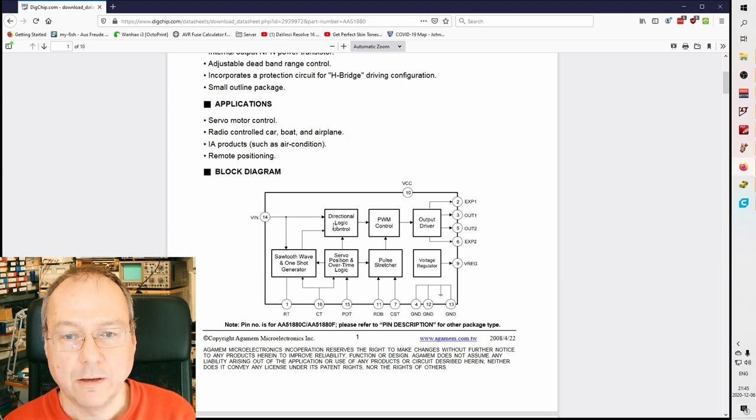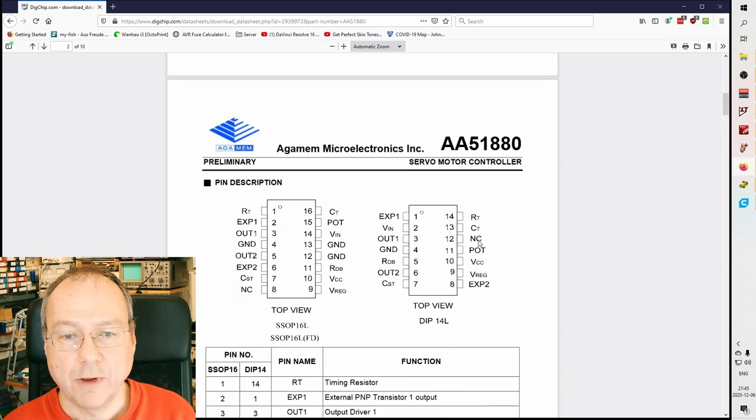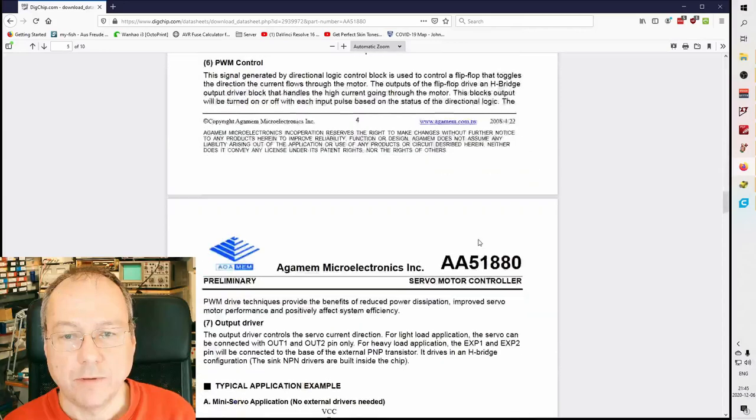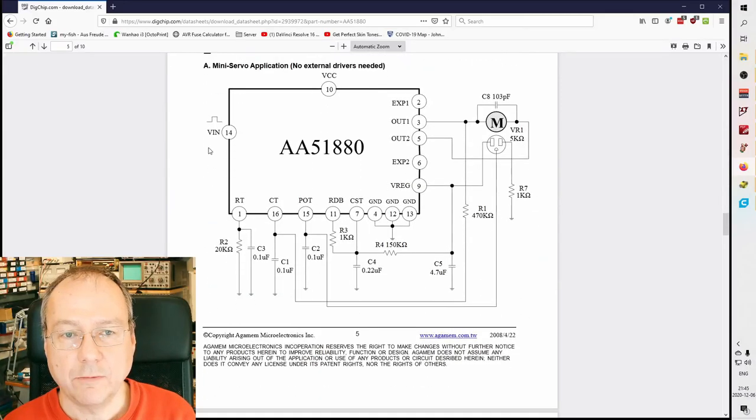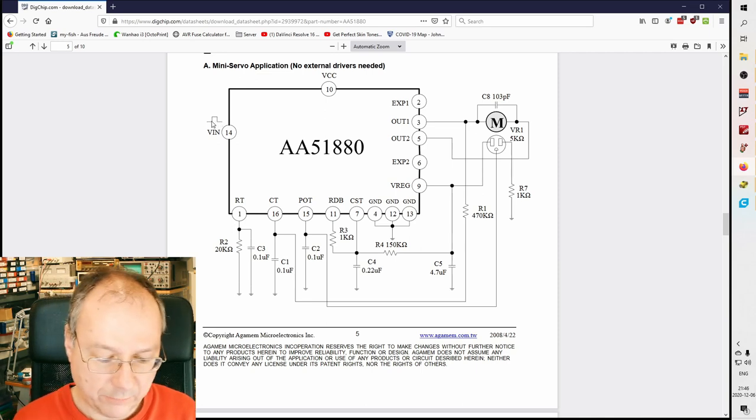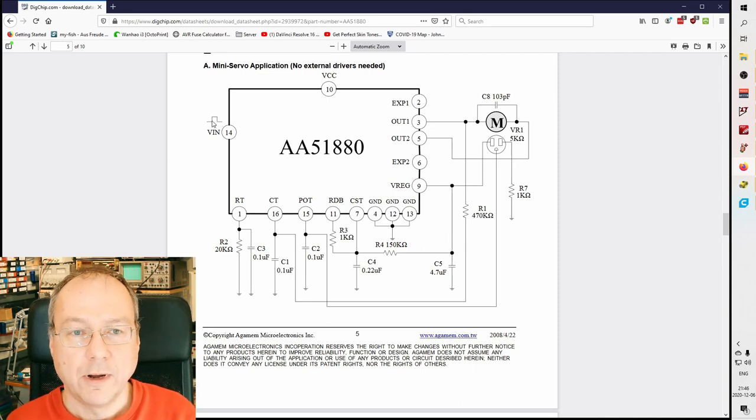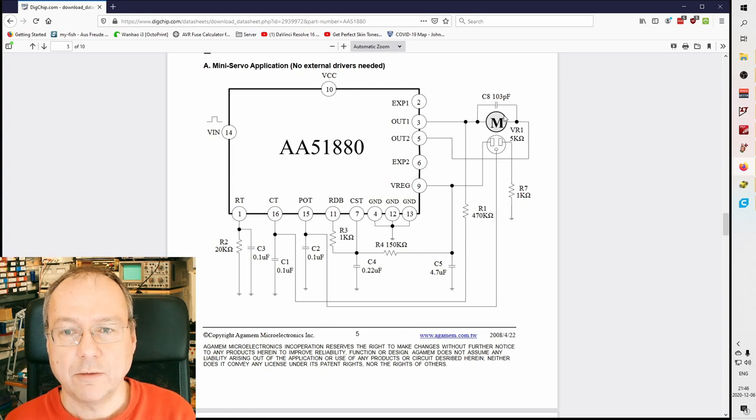If we scroll down we see some typical application examples. Here is one - it shows the typical pulse input which we have seen, so pulses between one and two, or in this particular case 0.4 and 2 milliseconds, give us a proportional control of the motor position.